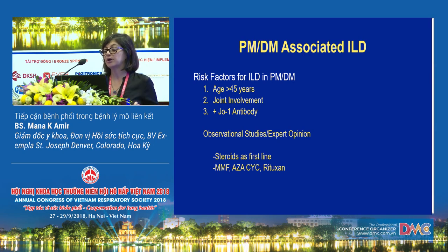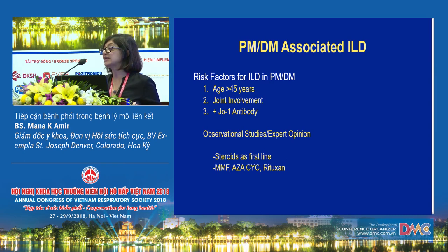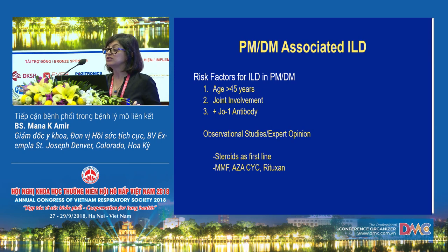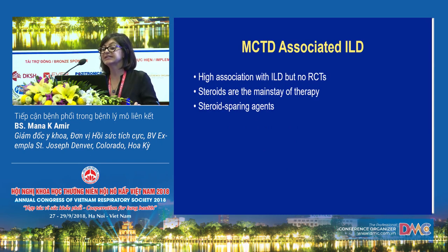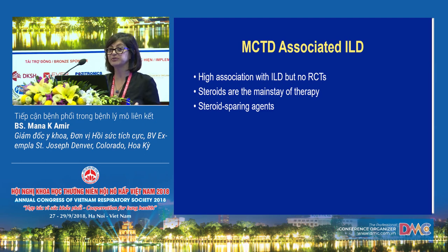In patients with polymyositis and dermatomyositis associated lung disease, risk factors for ILD include age greater than 45, joint involvement, and positivity for anti-Jo-1. There's no good data in this arena, but observational studies and expert opinion suggest steroids as first line, with second line being mycophenolate, azathioprine, cyclophosphamide, and rituximab. For mixed connective tissue disease-associated ILD, there is a very high association with ILD but absolutely no randomized controlled data. Steroids are the mainstay of therapy, and steroid-sparing agents are recommended.